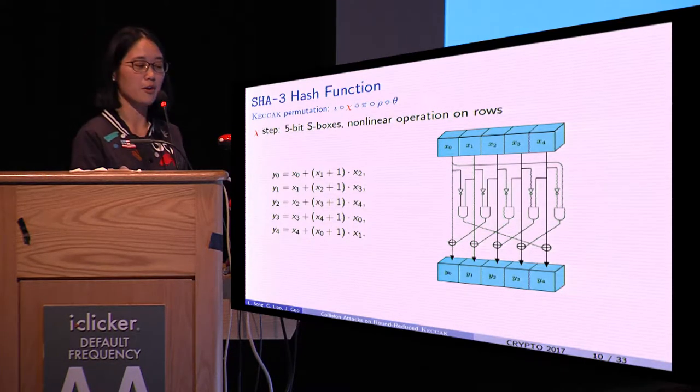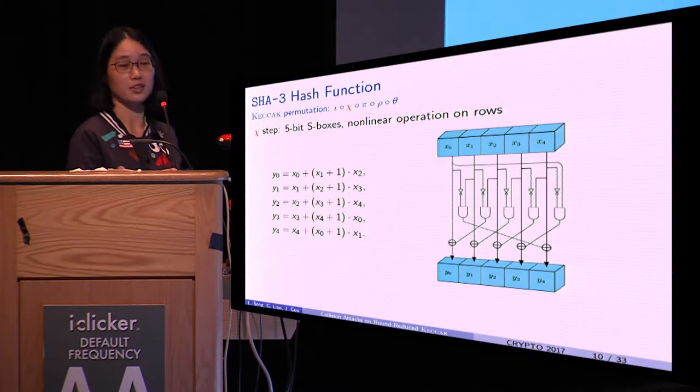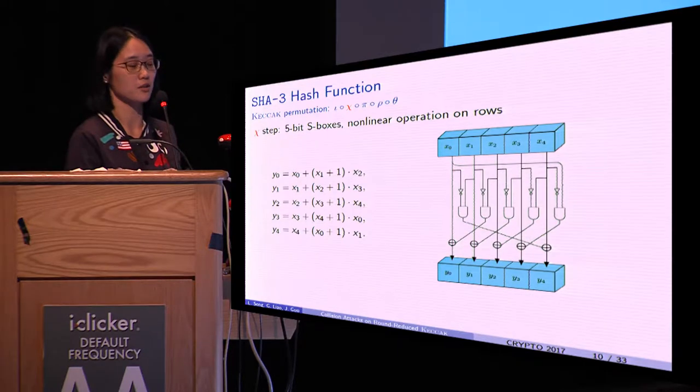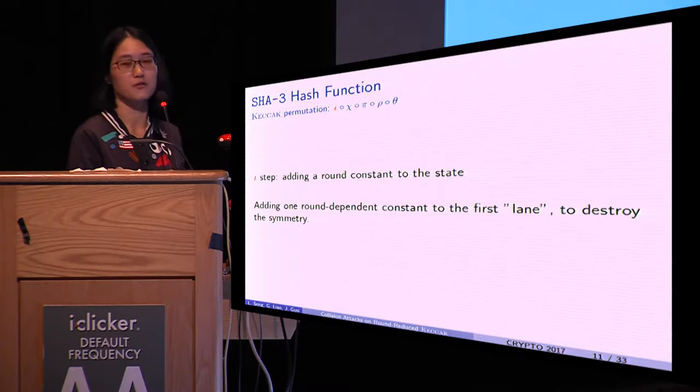Chi step applies a 5-bit S-box to each row. From the algebraic expression, it can be seen that the algebraic degree of chi is 2, which is quite low. Iota adds a round constant to the first lane to destroy symmetry.